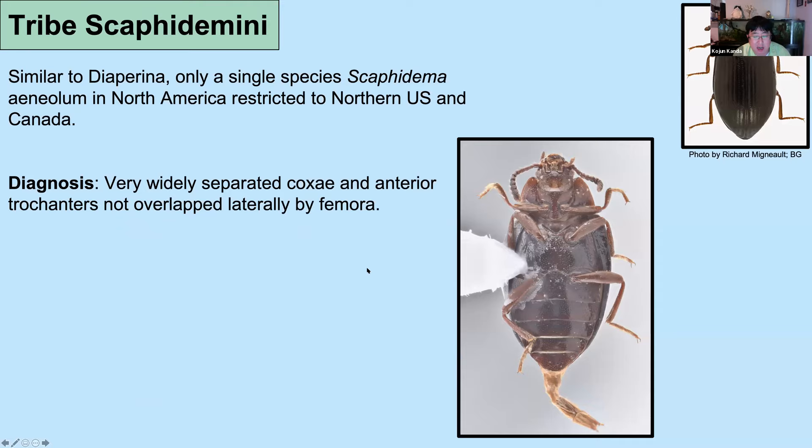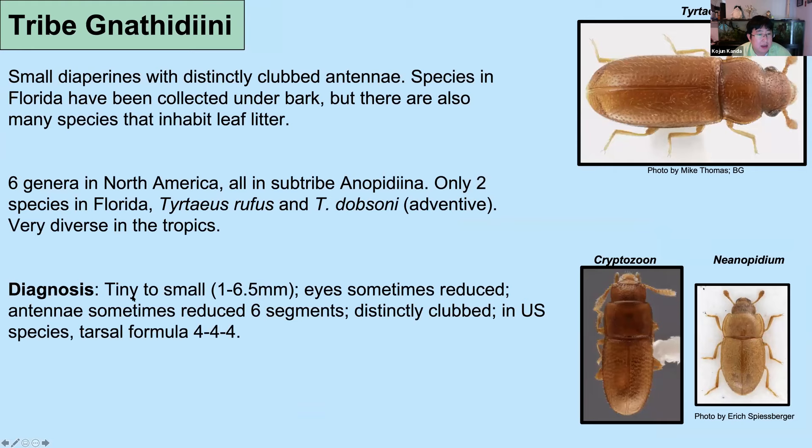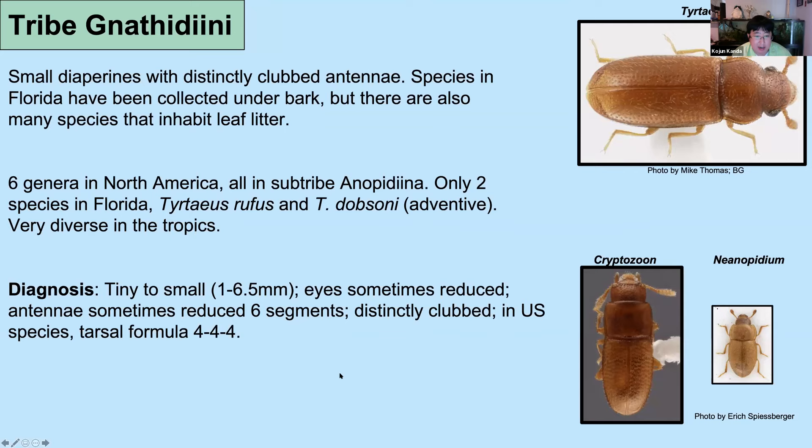The Scaphidematini is an interesting tribe — holarctic and not making it into Mexico or Central America. It looks very similar to Diaperini but is distinguished by having very widely separated hind femora, and also the anterior trochanters don't have that tenebrionoid overlap mentioned yesterday.